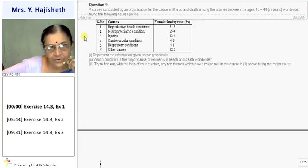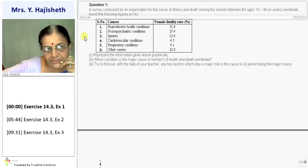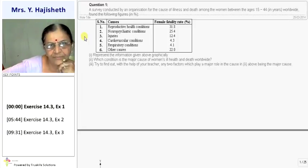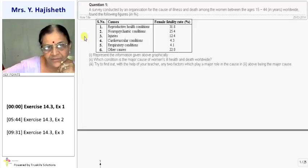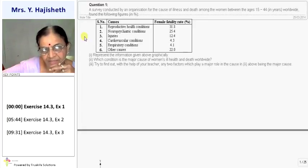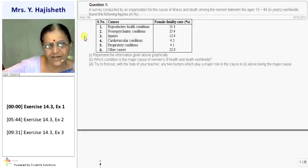First is cause. First cause is reproductive health condition. Female rate is 13.8. Then due to another cause the death is 25.4. Third cause injuries, that is 12.4. All the data is given.